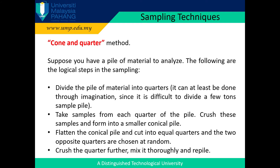Crush the quarter further, mix it thoroughly, and repile. The fixed procedures of cutting, randomly choosing opposite quarters, mixing and grinding, and repiling are continued until the sample of the size needed for replicate samples in the laboratory is obtained. This technique minimizes bias in the sampling. If the samples are to be obtained from a large area, the sampling should be done at regular grid-based points. You can use imaginary identical rectangles or hexagons for this purpose.